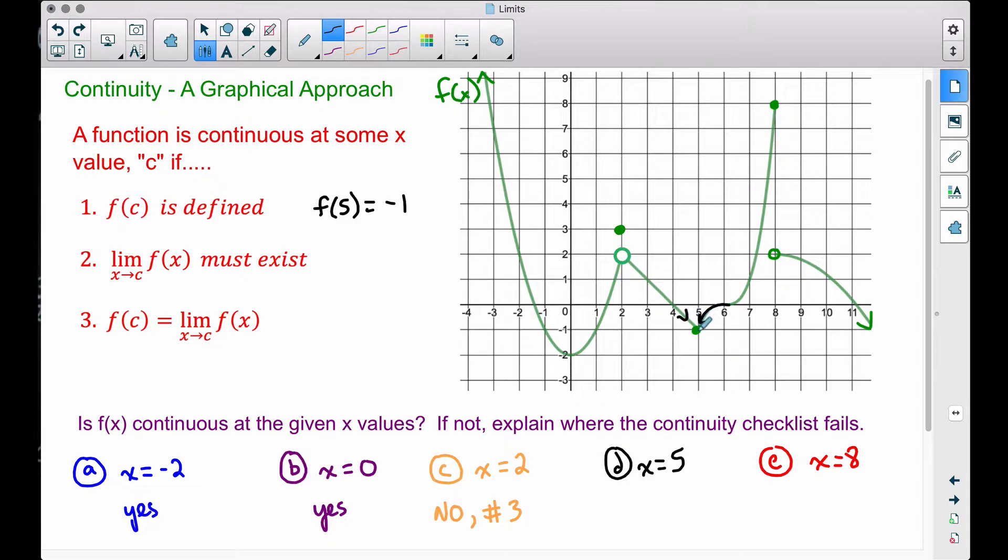we're approaching the same y value of negative 1. So the limit does exist. And now notice that the function's value at 5 and the limit as x approaches 5, they're both equal. And notice our continuity checklist works just fine here. So therefore, at x equals 5, the function is continuous. And in this case, I use the continuity checklist.